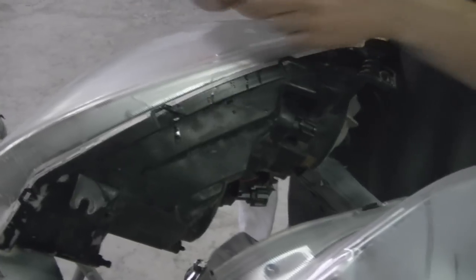So the first thing we're going to do is sand it down with some 600 grit wet paper and that's going to remove any of the defects on the front of the headlight.